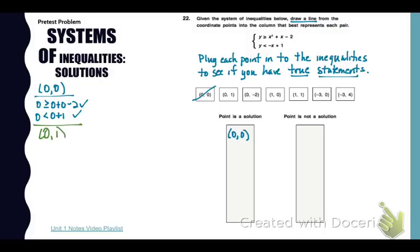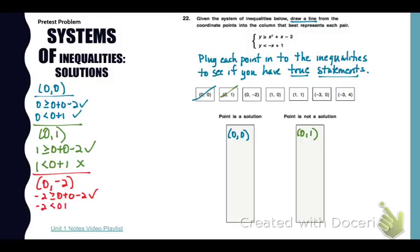Now let's plug in the point (0,1). I get 1 is greater than or equal to -2 which is true. But then I get 1 is less than 1 which is not true. So the point (0,1) goes into not a solution category. Now the point (0,-2). I get -2 is greater than or equal to -2 which is true. And -2 is less than positive 1. So that is a solution.